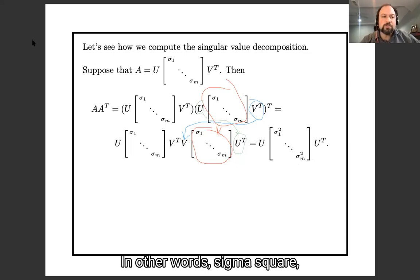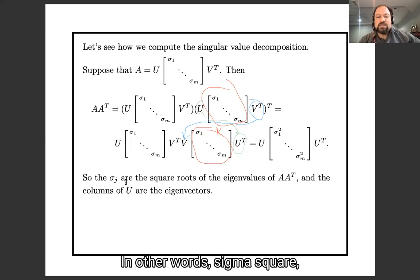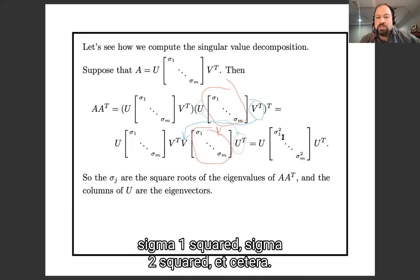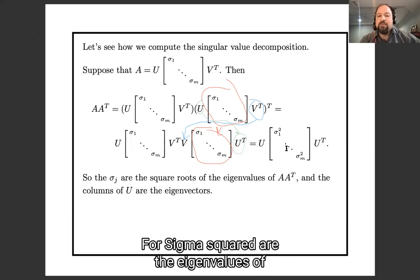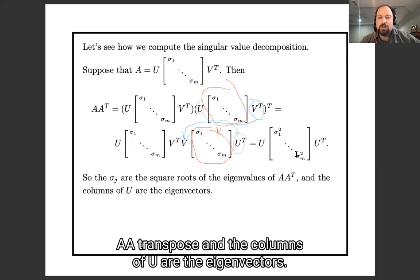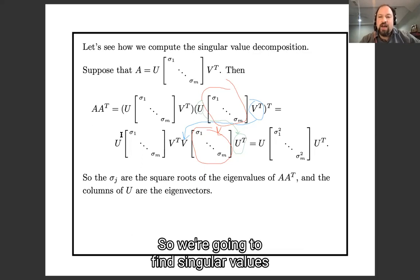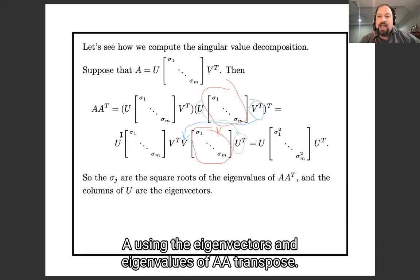In other words, sigma squared, sigma one squared, sigma two squared, etc. The sigma squareds are the eigenvalues of A, A transpose. And the columns of U are the eigenvectors. So we're going to find singular values and singular vectors of A using the eigenvectors and eigenvalues of A, A transpose.